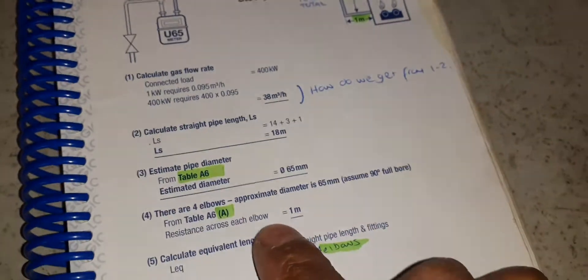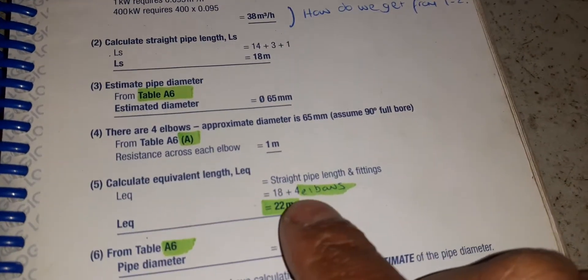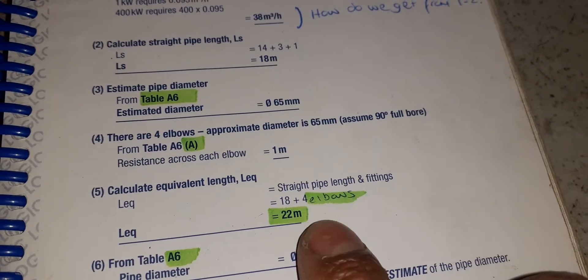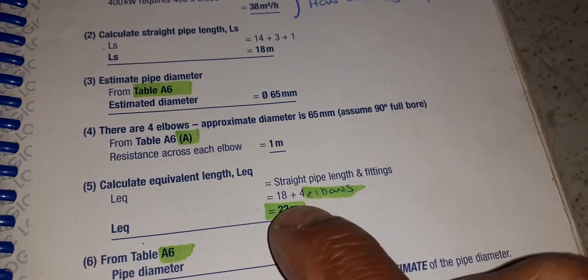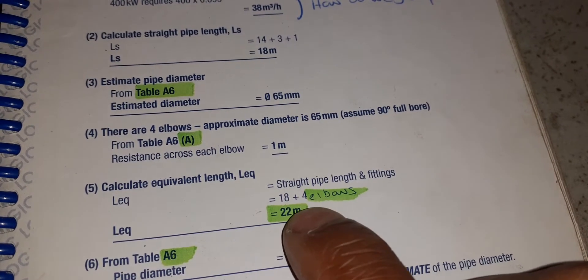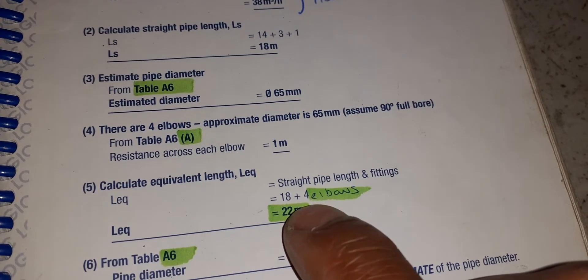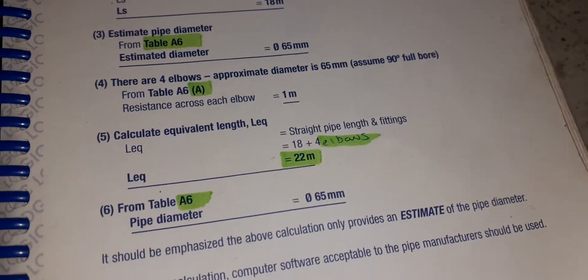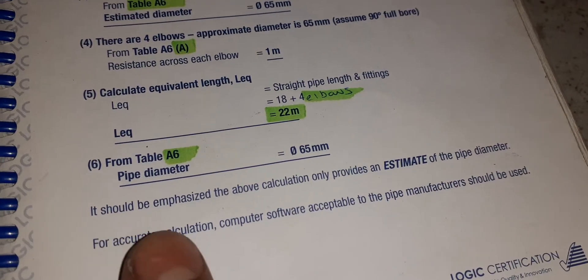So here we go: four elbows is gonna give us four meters worth that we have to add on to our straight length of pipework, and that adds up the restriction.